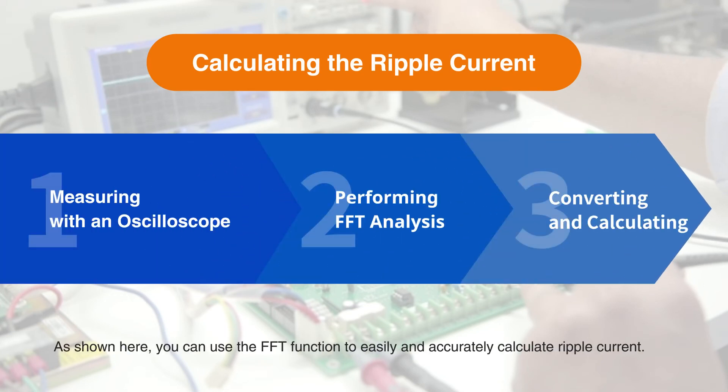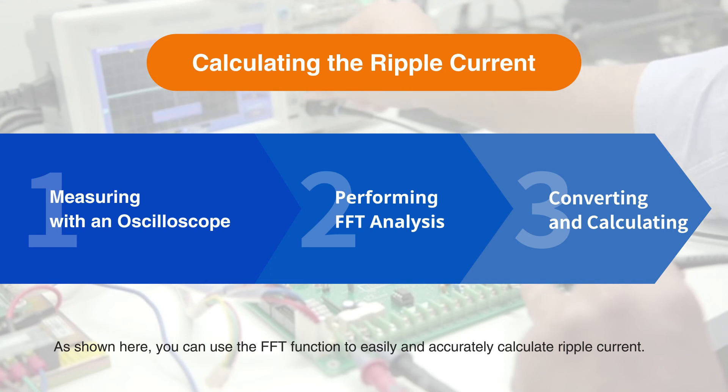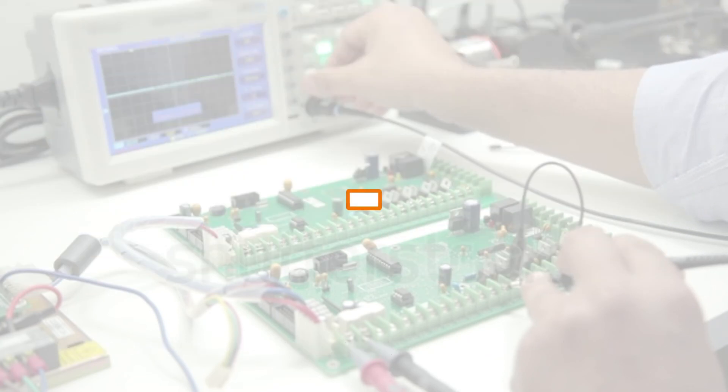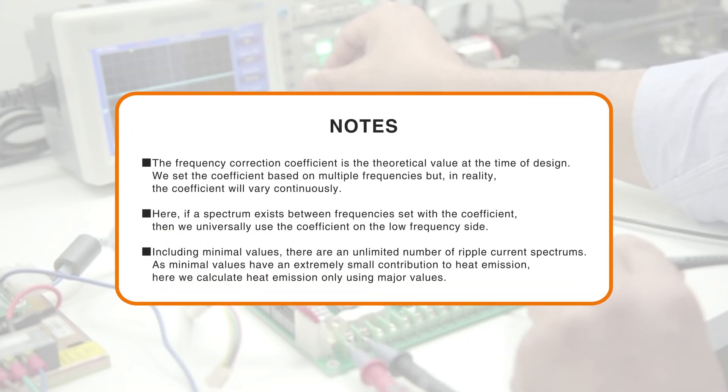As shown here, you can use the FFT function to easily and accurately calculate ripple current.